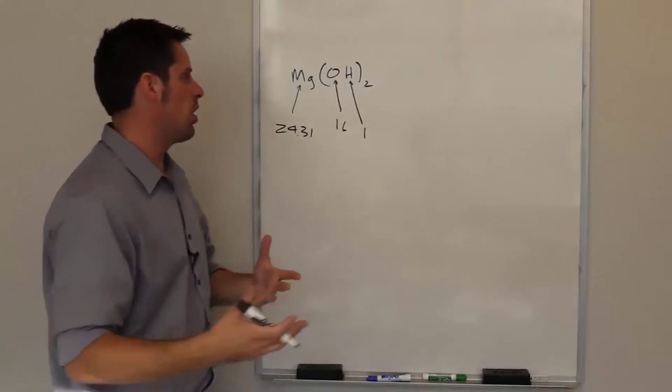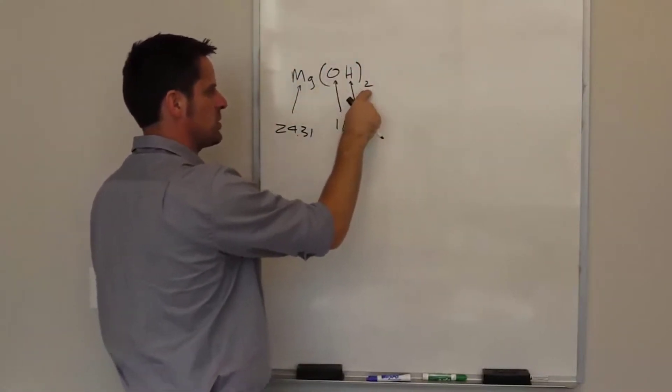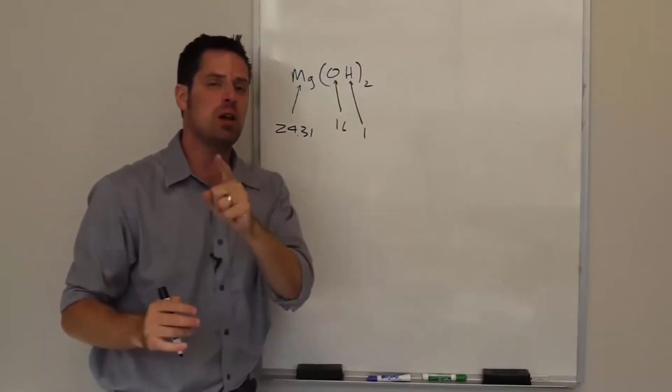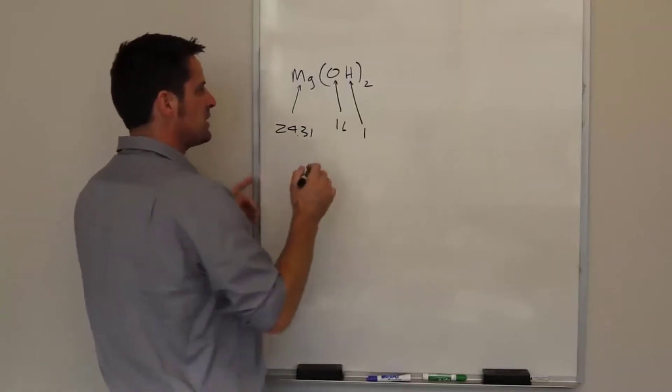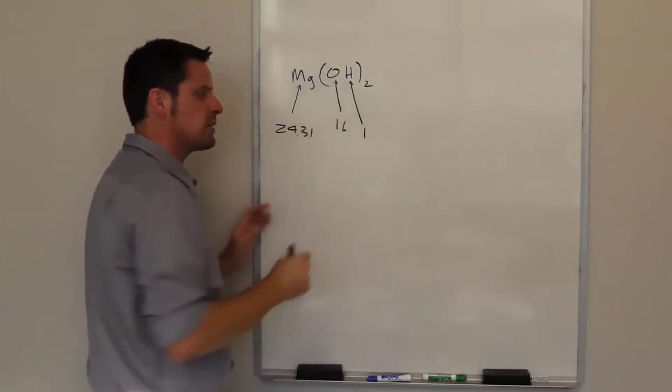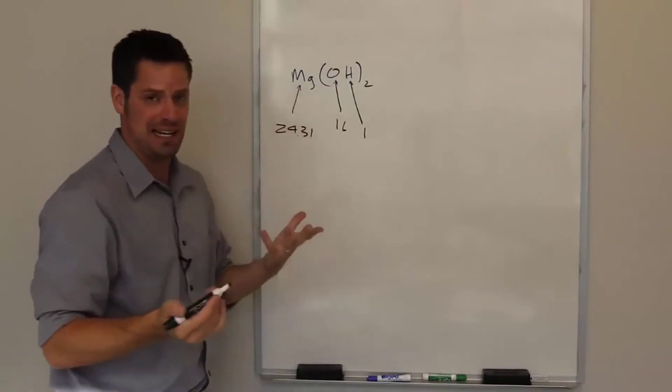Next, we determine how many total atoms there are. You'll notice that there's an OH here, but it's wrapped in brackets and has a 2 next to it. What that really means is that each molecule of this magnesium hydroxide has two total OHs in it. So there are actually two oxygen atoms and two hydrogen atoms total in each molecule of this compound. There's still only one magnesium.